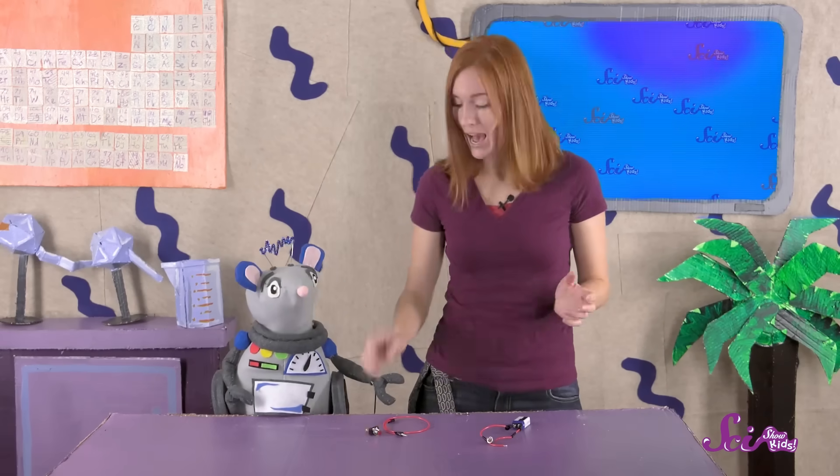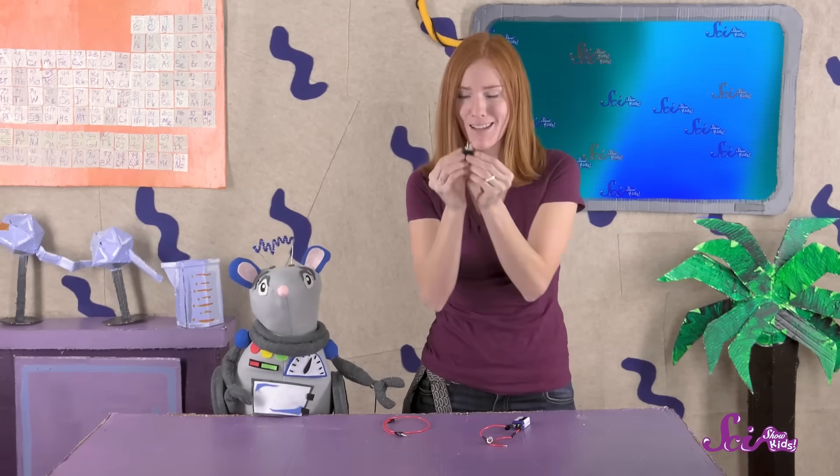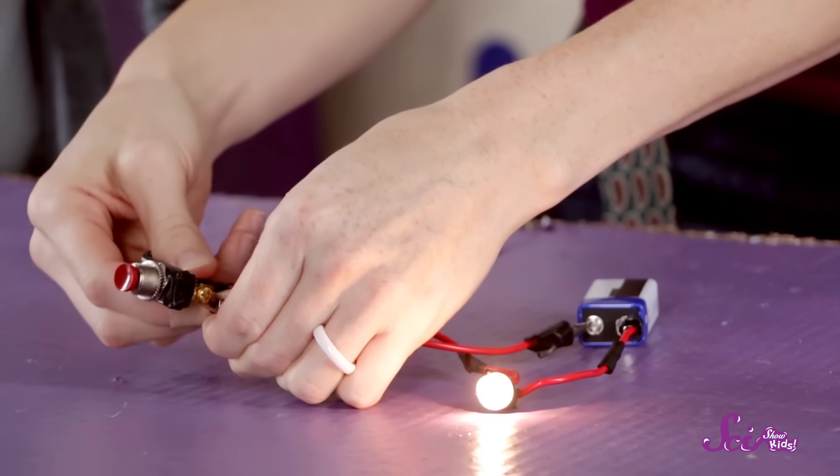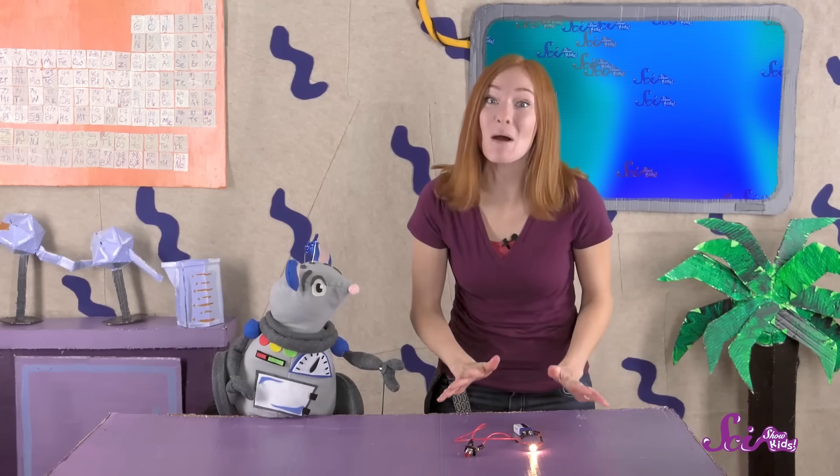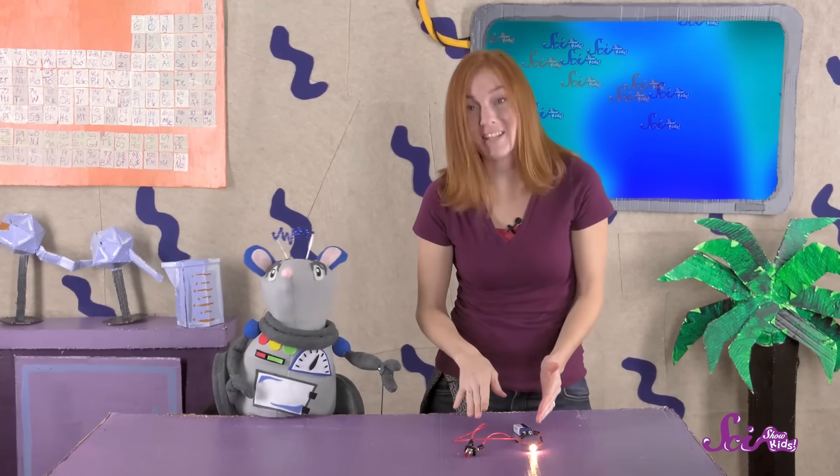Now, I'm going to add something else to make it work a little more like a flashlight does. I have this part that looks like a button, and I'll put it right here. And look, the bulb is lighting up! That means that there are no spaces in the circuit.